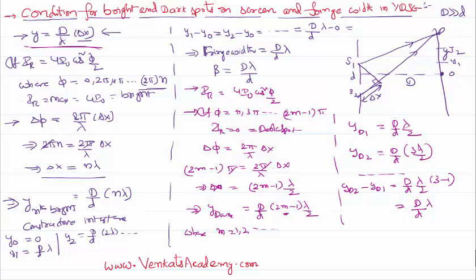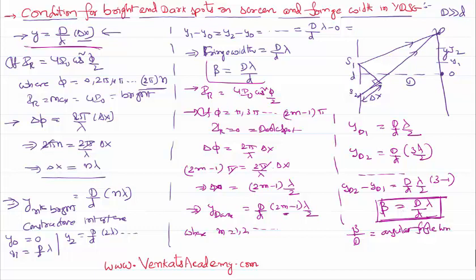So it is very clear that the distance between two successive bright spots, or even the distance between two successive dark spots — which is called the fringe width of Young's interference pattern — is constant, equal to capital D by small d times lambda. Even this fringe width divided by capital D is called the angular fringe width, which is equal to λ/d, where λ is the wavelength used and small d is the distance between the slits. Thank you for watching, keep coming back for more video lessons.